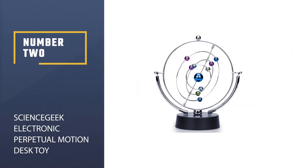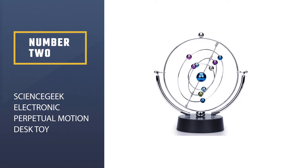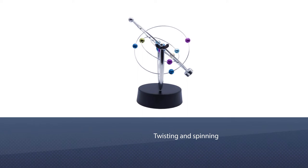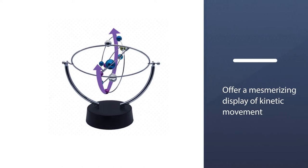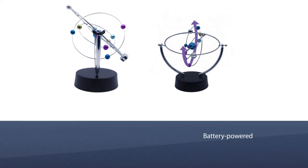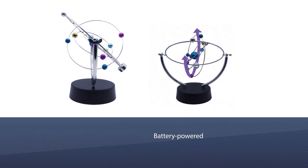Number 2: Science Geek Electronic Perpetual Motion Desk Toy. Make room for a little space on your desk with this celestial-inspired kinetic desk toy. The tiered galaxy-inspired gadget swings, ring-twisting and spinning, to offer a mesmerizing display of kinetic movement. This battery-powered office accessory gives the relaxing illusion of perpetual motion as you work.